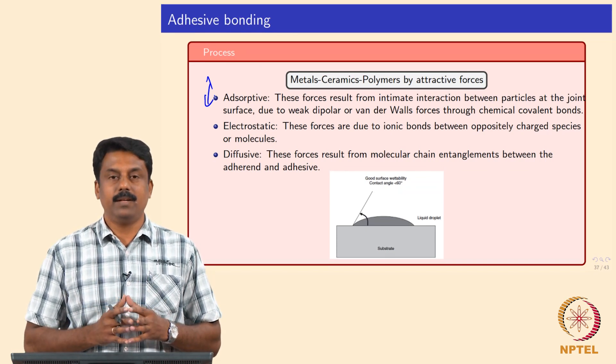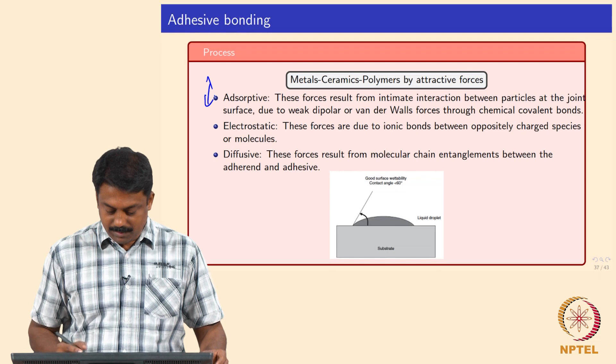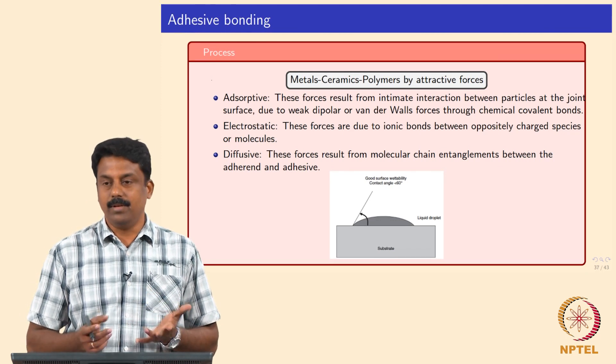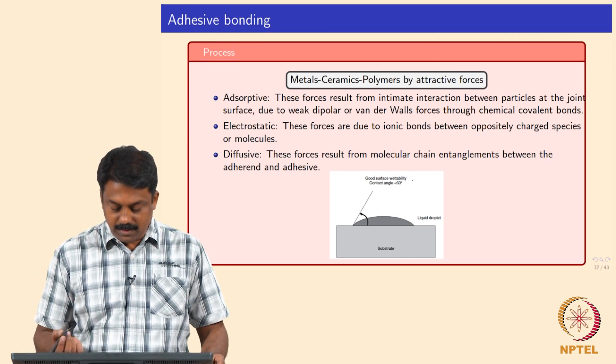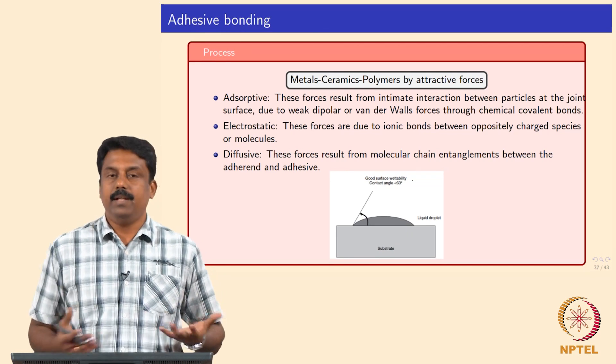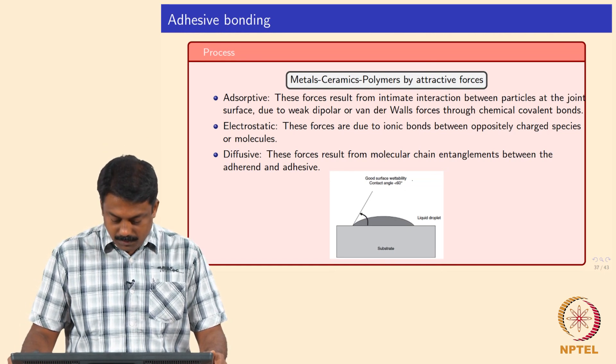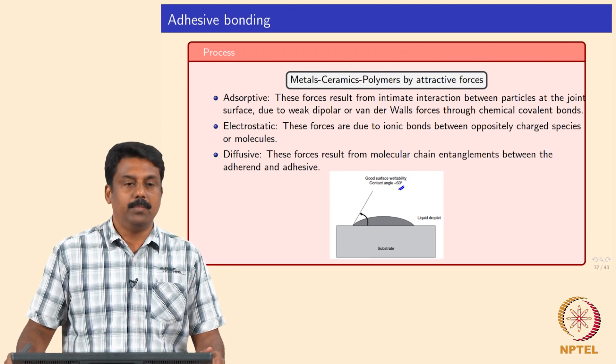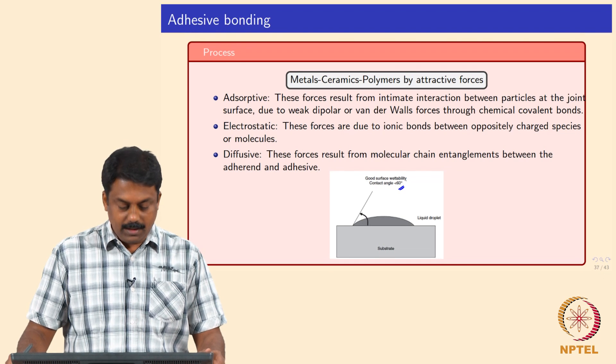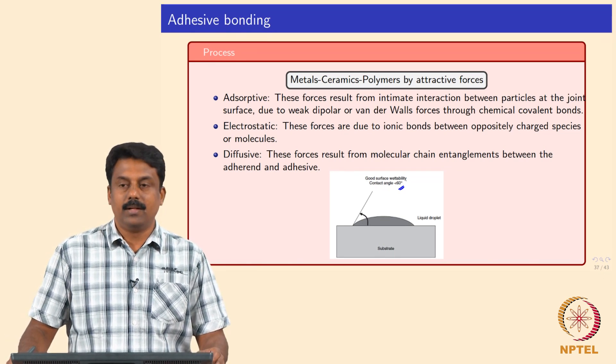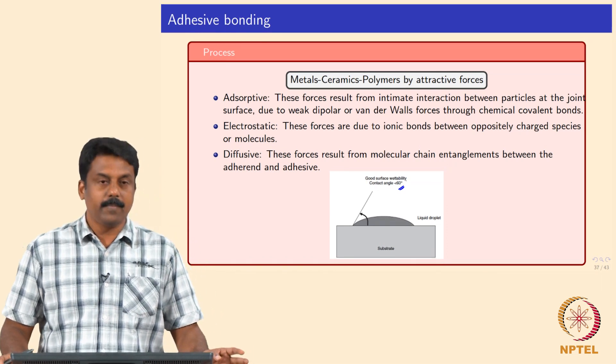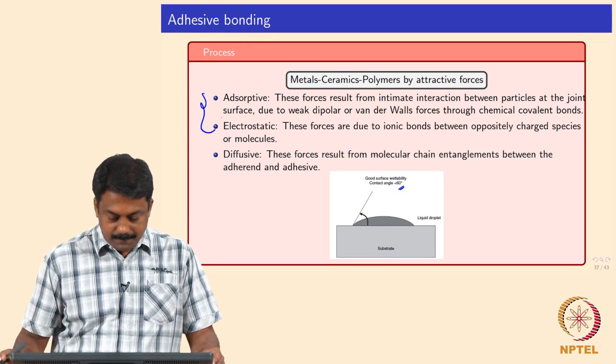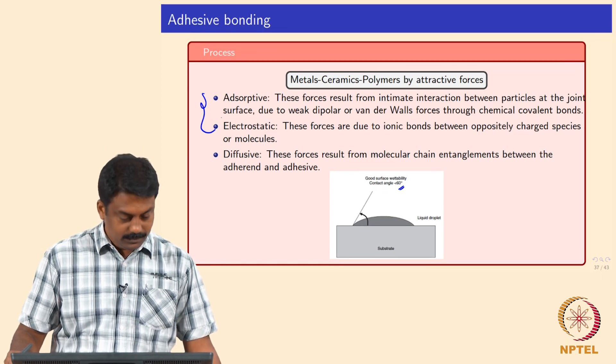The main important characteristic of adhesive is the wetting. The wetting angle theta should be less than 60 degrees. If it is more than 60 degrees, then it is not advisable to use that. The wetting angle theta less than 60 degrees, otherwise it is not going to wet the surface. So the important characteristic of adhesive should be that the contact angle, the wetting angle, should be less than 60 degrees and then it should work in this principle.